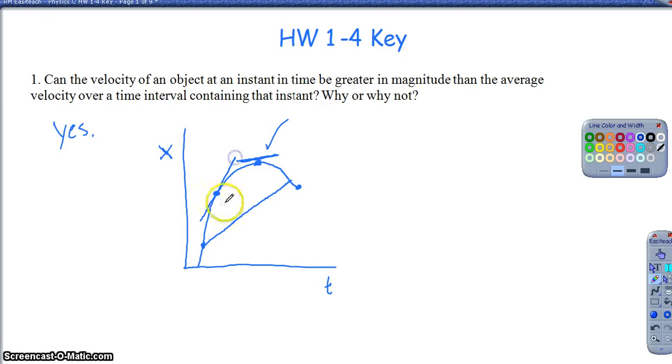Is it possible for it to be greater in magnitude? Well, yeah, that's possible too, right? If I chose this slope over here, the tangent line would be much steeper than this slope right here. Okay, so the bottom line is yes. In fact, the only time we know the instantaneous velocity is equal to the average velocity is if it is a constant velocity.